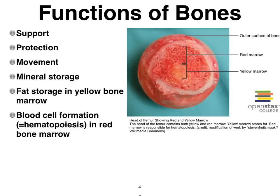Our bones are rich in minerals. The most important are calcium and phosphorus, which occurs in the form of phosphate. Sodium, potassium, magnesium, and so on are also found in our bones. Calcium and phosphate form little salt crystals. There's lots of mineral storage, but also storage of fat tissue — adipose tissue — especially in the long bones, which have a cavity on the inside to keep them light.